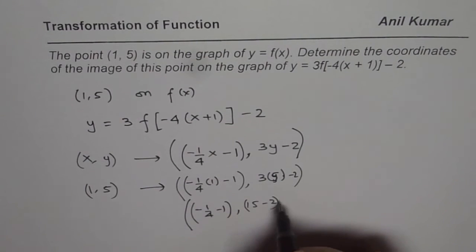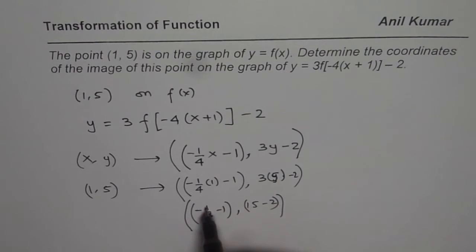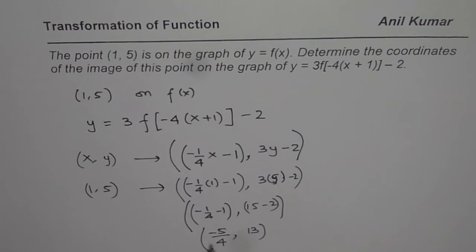So that is the new coordinate point. If you calculate, -1/4 minus 1 equals -1/4 minus 4/4, so we get -5/4 as the x value. And 15 minus 2 is 13. So the new point is (-5/4, 13).